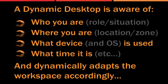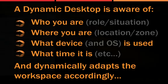Like cars, a desktop or workspace can also be context-aware and dynamic. It may adapt content and appearance based on who you are, where you are, the type of device the user is using, and the time of day, and so on. The dynamic desktop will also take into account the user's individual needs and preferences, and also organizational compliance, rules and policies at the same time.